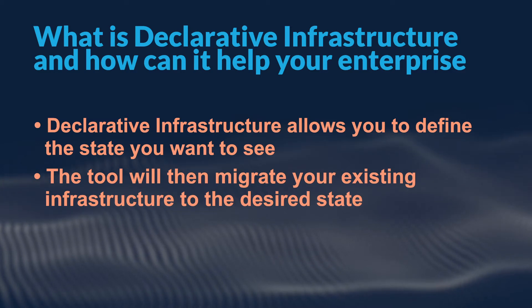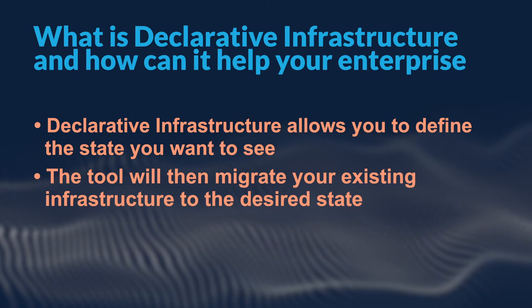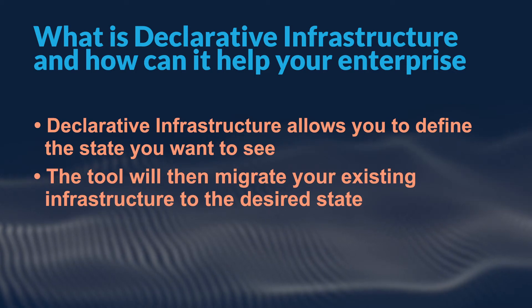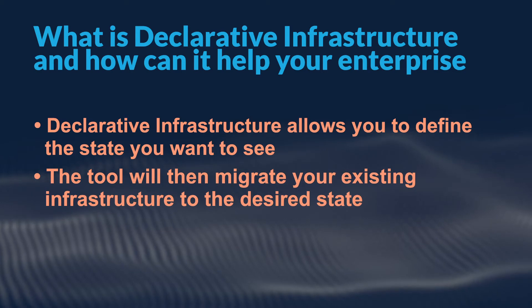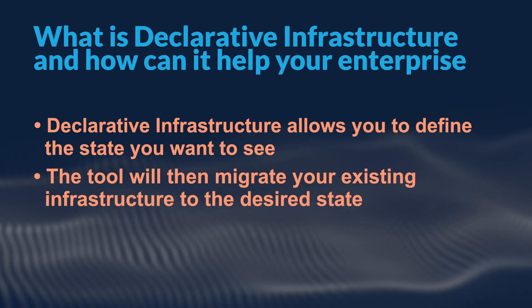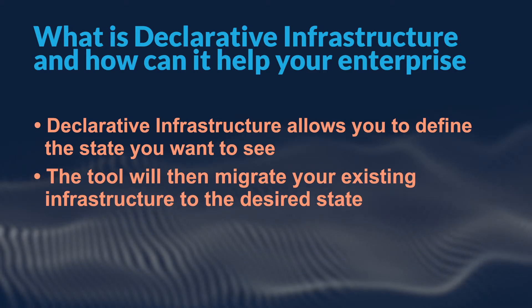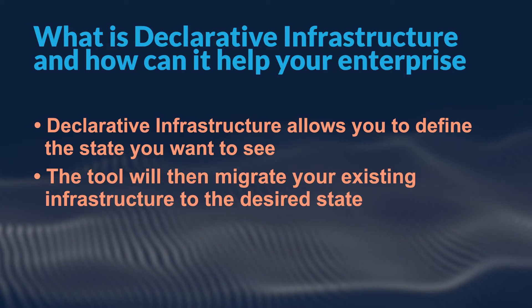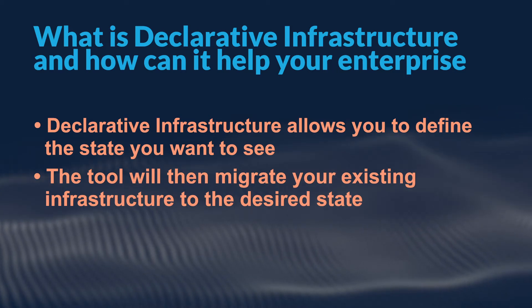In other words, you may want to deploy an application today that you deployed previously, but from a different starting point. Declarative infrastructure puts this burden on the computer. By defining the end point that you want, by defining how you want your software and hardware to be set up and run, you allow the software to deduce the series of steps needed to take the cloud system from whatever starting point it's at, whether it's empty or already running, and move it into the state that you require.